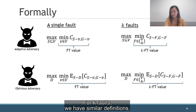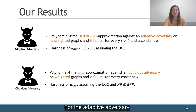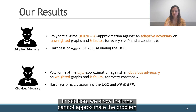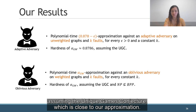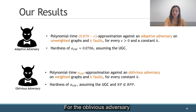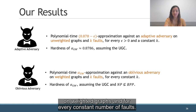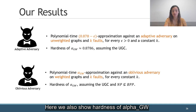And these are our results. For the adaptive adversary, we present a polynomial time 0.878 approximation that works on unweighted graphs and every constant number of faults. In addition, we show that one cannot approximate the problem within a factor greater than 0.8786, which is the constant of Goemans and Williamson, assuming the Unique Games Conjecture, which is close to our approximation. For the oblivious adversary, we present a polynomial time alpha_GW approximation on weighted graphs and for every constant number of faults. Here we also show hardness of alpha_GW, assuming the Unique Games Conjecture and assuming that NP is not contained in BPP.